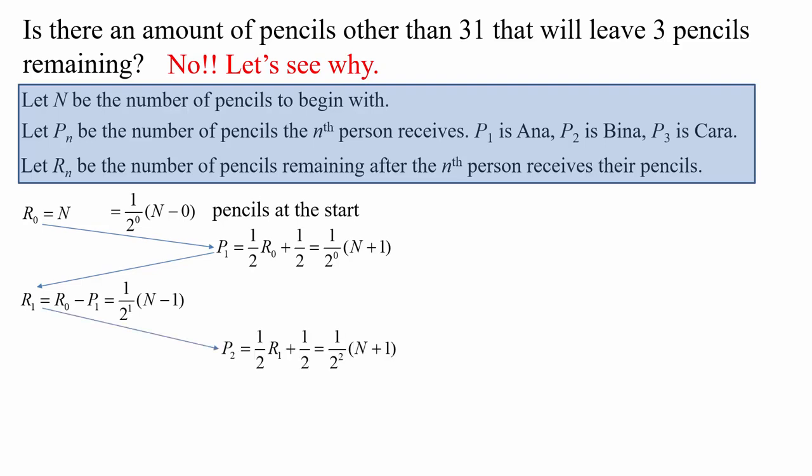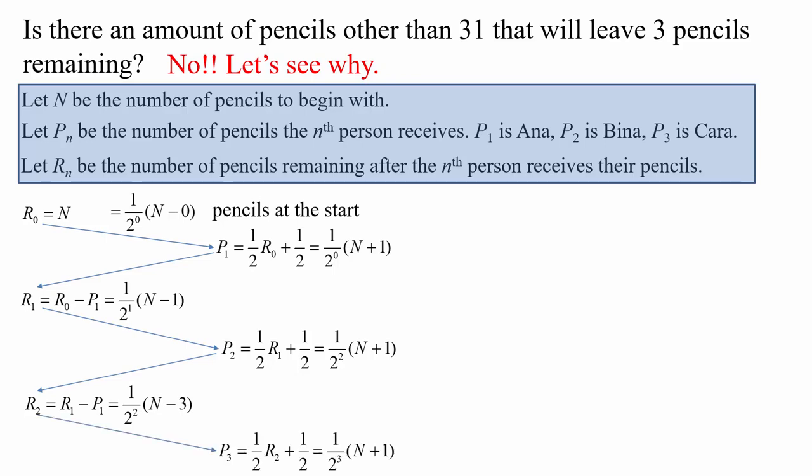Now that we know what R0 is, the first person will receive a half of R0 plus another half, and that simplifies to one over two to the power of one, bracket N plus one. Using that, the remainder after Anna receives her share will be R0 minus the number of pencils Anna received, which simplifies to one over two to the power of one bracket N minus one. Using R1, the number of pencils for the second person P2 is a half of R1 plus another half, and making the substitution for R1, the expression simplifies to one over two squared bracket N plus one. R2 equals R1 minus P2, which comes out to one over two squared bracket N minus three. And then P3 will be a half of R2 plus a half, which is one over two to the power of three bracket N plus one.